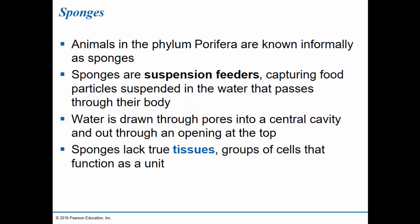Sponges come from a phylum known as Porifera. They're sessile animals — that means they don't move. They're rooted in a particular place in the ocean, and they're suspension feeders. These marine organisms capture food particles that have been suspended in the water. They use special cells to create a current and draw water through pores or holes that eventually draw the water into a central cavity and flush it out through an opening at the top. As the water moves through pores, they can then collect food particles such as phytoplankton and zooplankton, or organic nutrients.